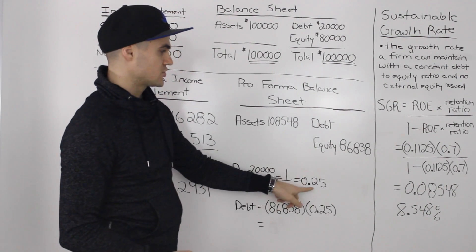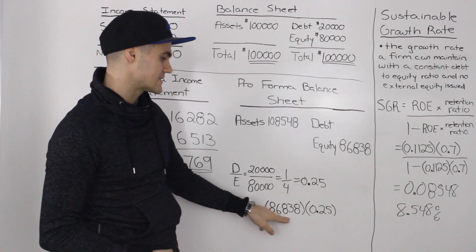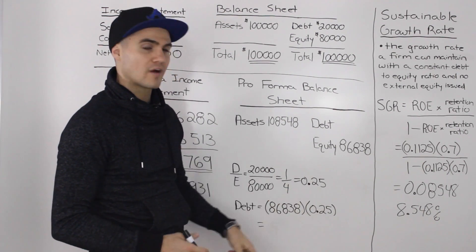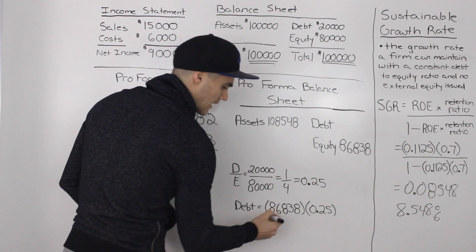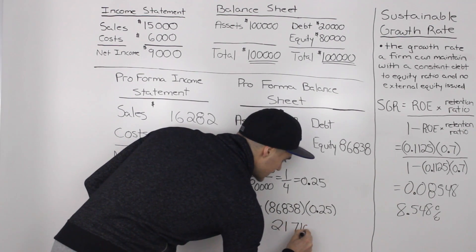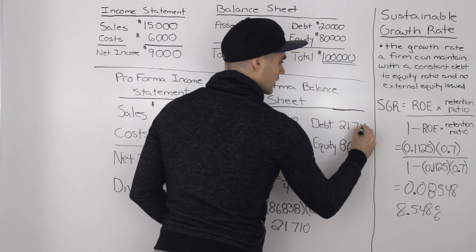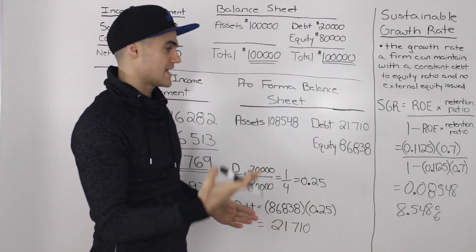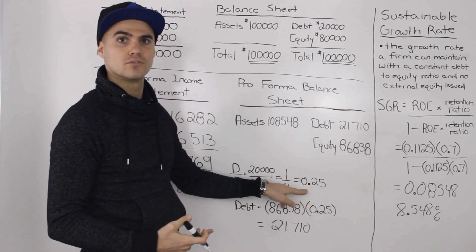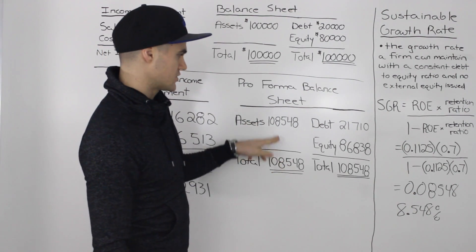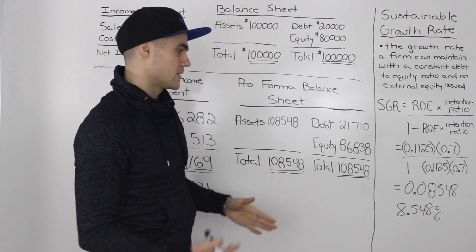Using that debt-to-equity ratio, we can figure out the max debt on the new pro forma balance sheet by taking the equity amount of $86,838 and multiplying it by 0.25 — figuring out what 25% of that new equity figure is. That gives us a new debt figure of $21,710. We can have debt at $21,710 and no more, still maintaining our debt-to-equity ratio of 0.25. Notice when we balance both sides of the balance sheet, we would get both sides balancing at $108,548. So we met our goal.